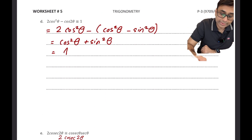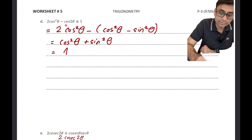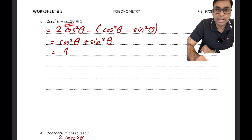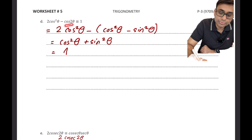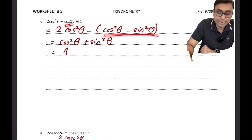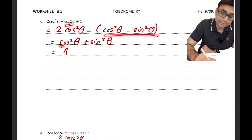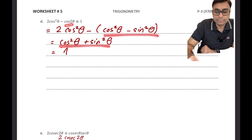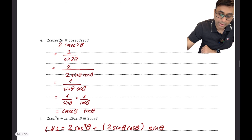So this becomes cos²x + sin²x, which equals 1 by the trigonometric identity. Similarly for another identity, cos 2θ = cos²x - sin²x simplifies to cos²x + sin²x, which equals 1.